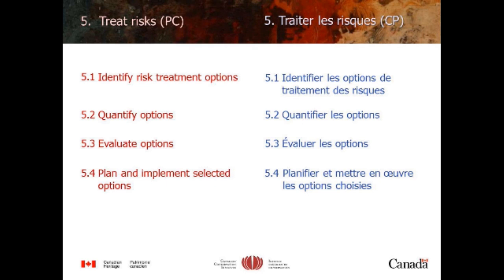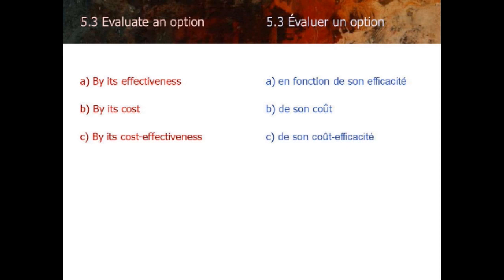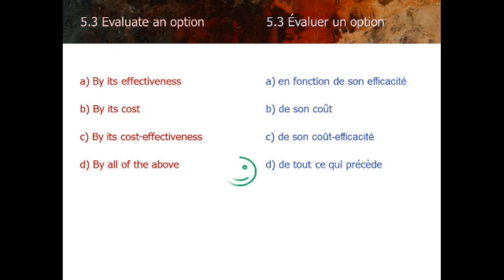I'm going to be looking at evaluate options — step 5.3. Within that, we're going to look at evaluating by effectiveness, by cost, and by cost-effectiveness. The question is, which one should you use — A, B, C, or D? I'll give you the punchline now: those three different things don't always agree on which option is the best, the optimal. They can be in conflict, which is not what we always expected at the beginning. The answer is you should consider all of the above.